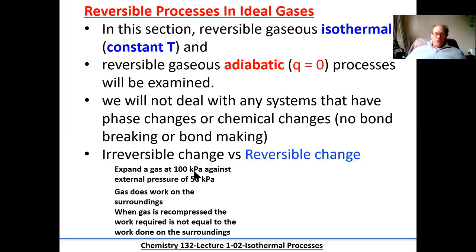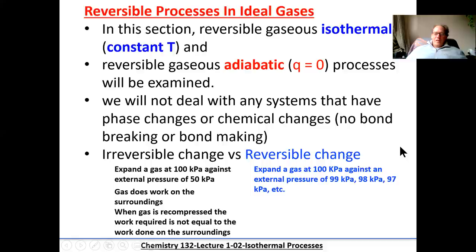Now let me refer to a theoretically possible reversible change, which is what we're going to calculate — in theory, just like we deal with ideal gas laws. There's no such thing as an ideal gas, but we simplify the situation to understand it. For a reversible change, we take the same gas at 100 kilopascals in a confined system with a pin. We're going to change the external pressure very, very incrementally — 99 kilopascals, then 98, then 97 — expanding the gas very, very slowly.